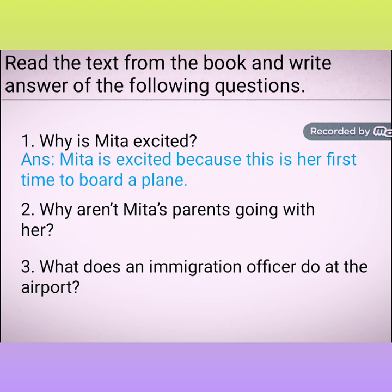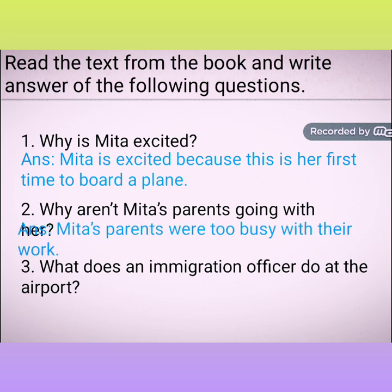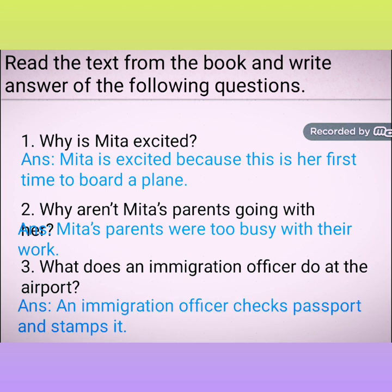Why is Mita excited? Mita is excited because this is her first time to board a plane. Why aren't Mita's parents going with her? Mita's parents were too busy with their work, so they are not going with her. What does an immigration officer do at the airport? An immigration officer checks the passport and stamps it.